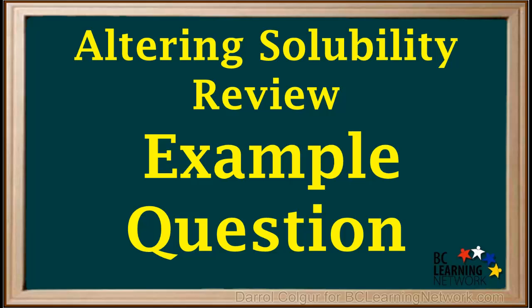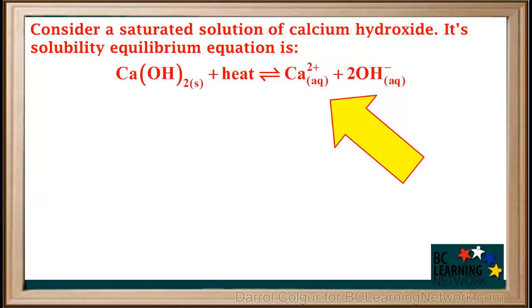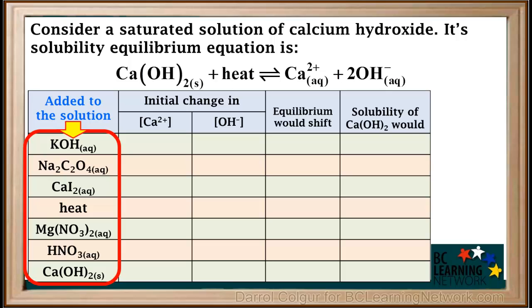Here's a question that will help you review how the solubility of a compound can be altered. We're asked to consider a saturated solution of calcium hydroxide and we're given its solubility equilibrium equation. Various things are added to the saturated calcium hydroxide solution and we're asked to fill in the table to show what would happen. Pause the video now and try to fill this in on your own first, then resume the video.